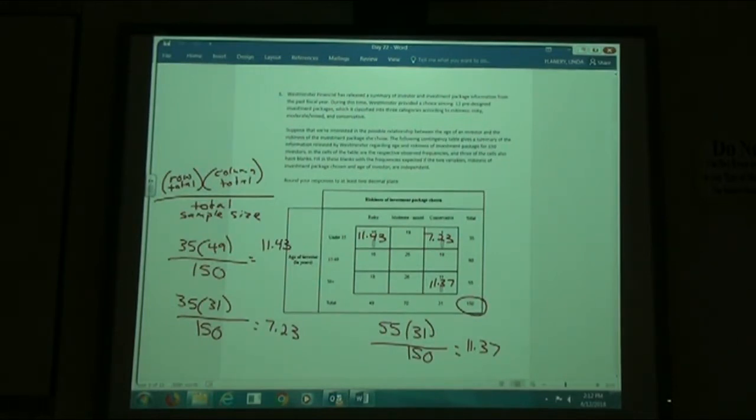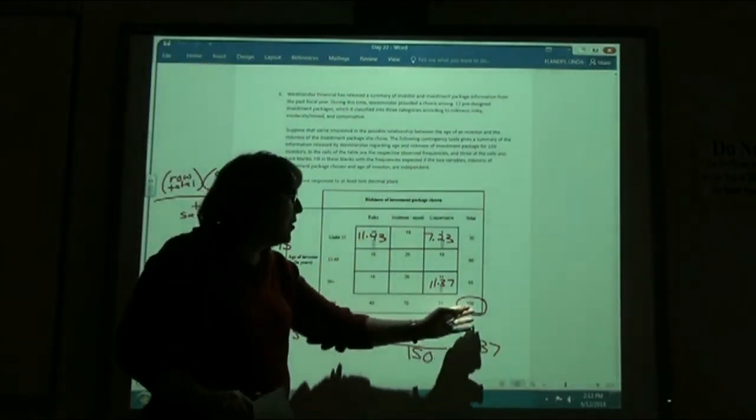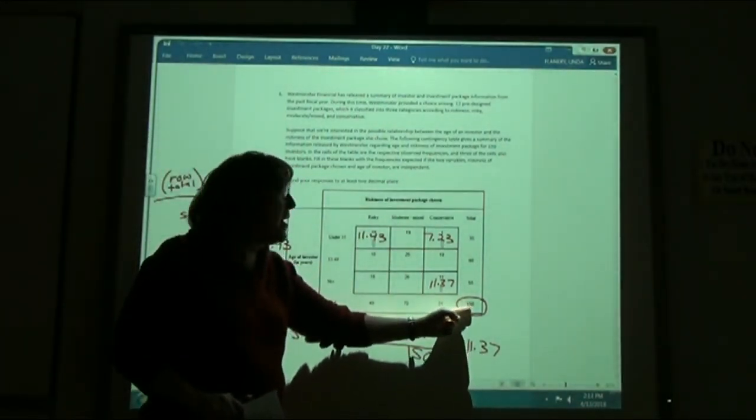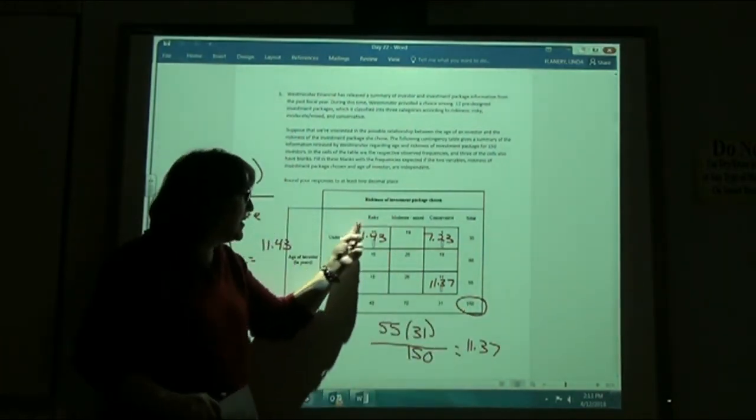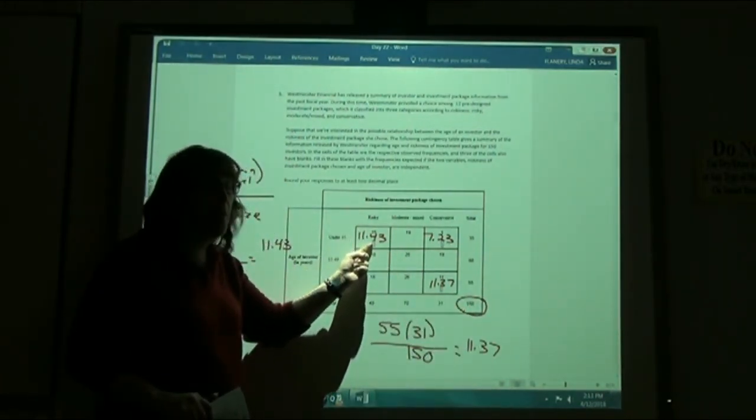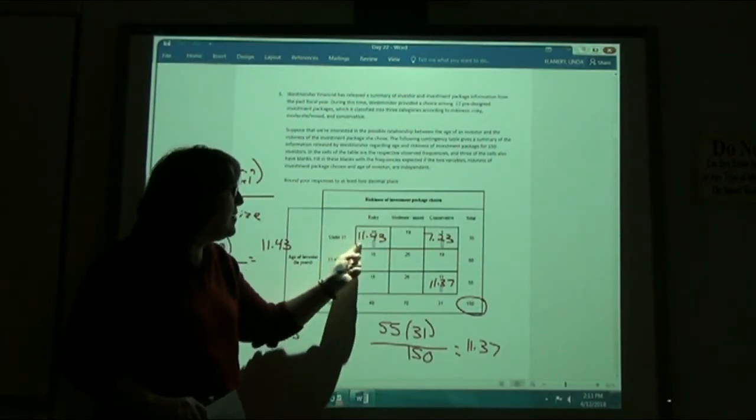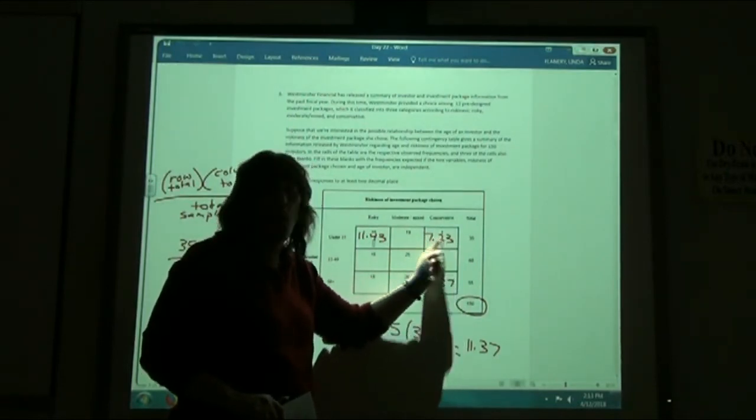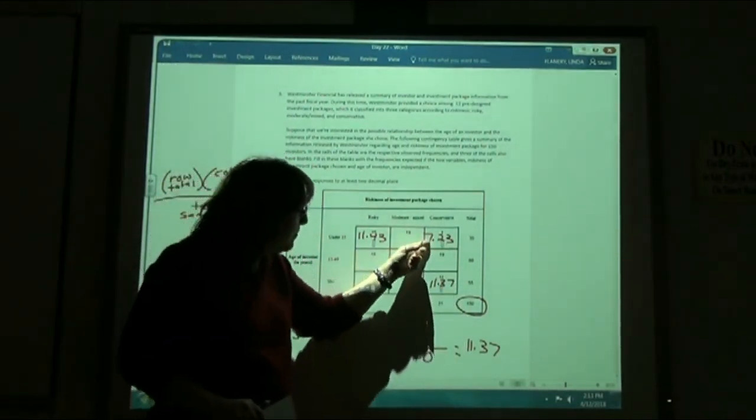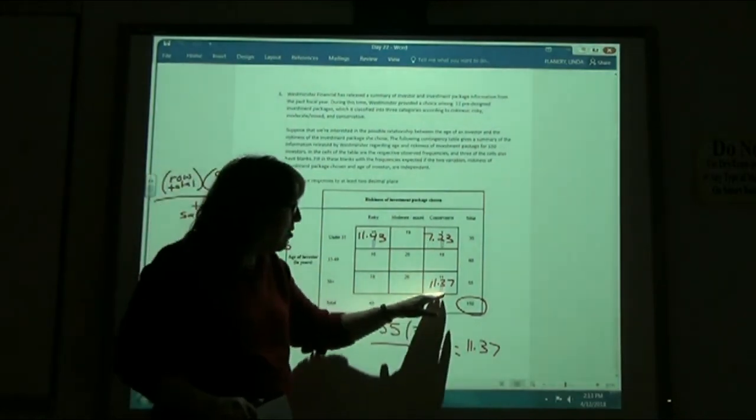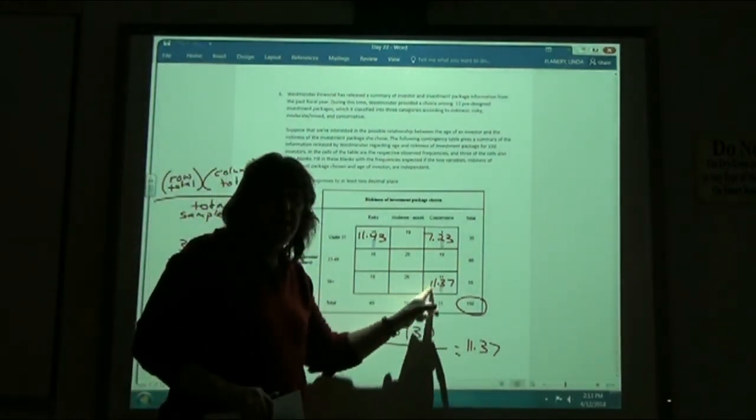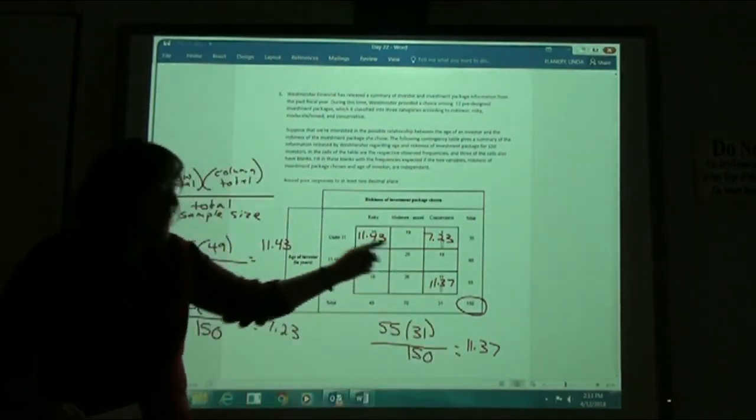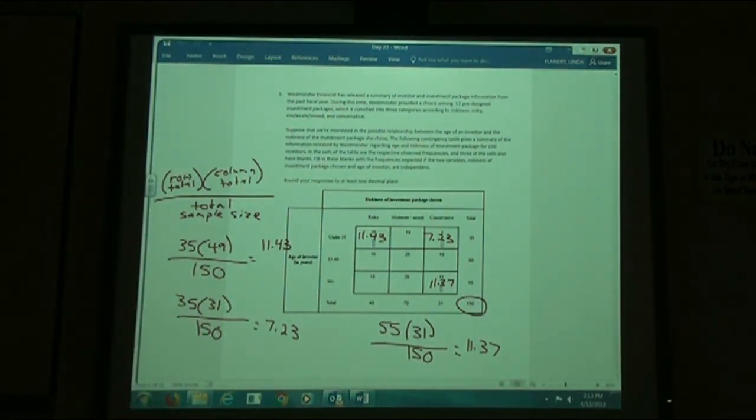So here my expected frequencies are what I found. What this really means is if I were going to survey 150 people, I would expect that I would have 11.43 in this category. I actually had 15, but that's what I would expect. Over here I would have expected to have 7.23, or about 7 people in that category. Down here I would have expected to have 11.37. I got 11, so I was pretty close on that one. So those are my expected frequencies based on my table.